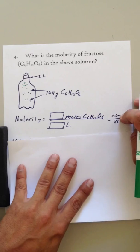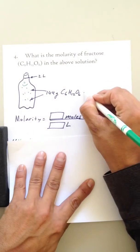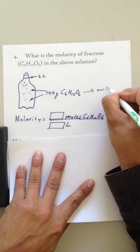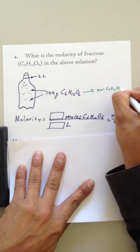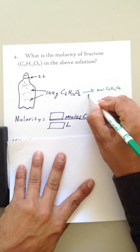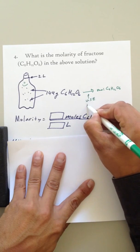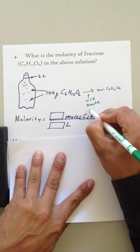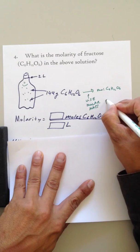First thing, we have grams. Can we convert grams to moles of C6H12O6? Yes, we can, using the molar mass.